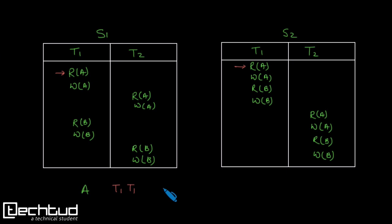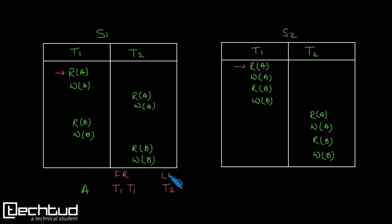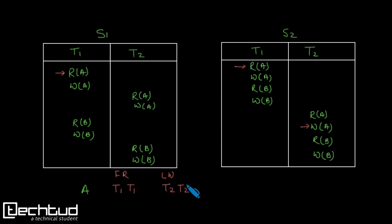Now let's check the last write condition for variable a. In schedule s1, t2 is performing the last write on a. In schedule s2, we can also see that the last write on variable a is being performed by t2. So in both schedules the first read is performed by the same transaction and the last write is also performed by the same transaction.